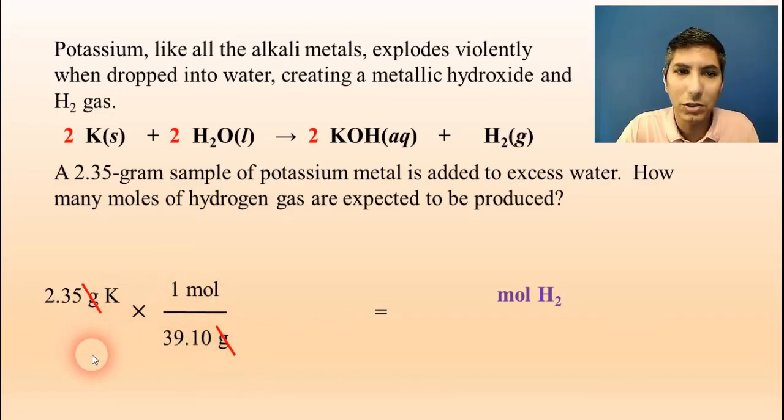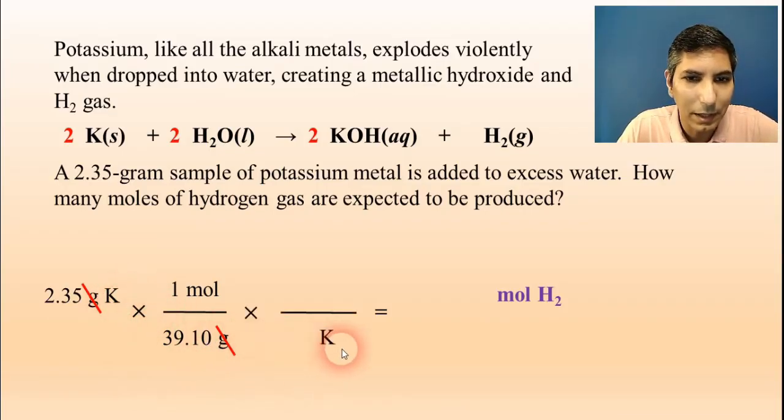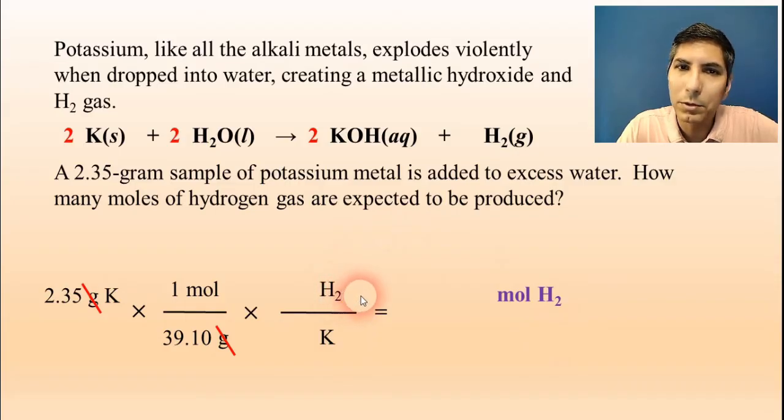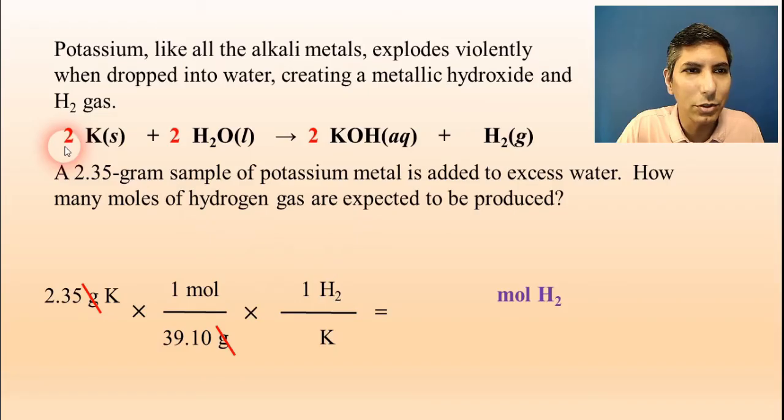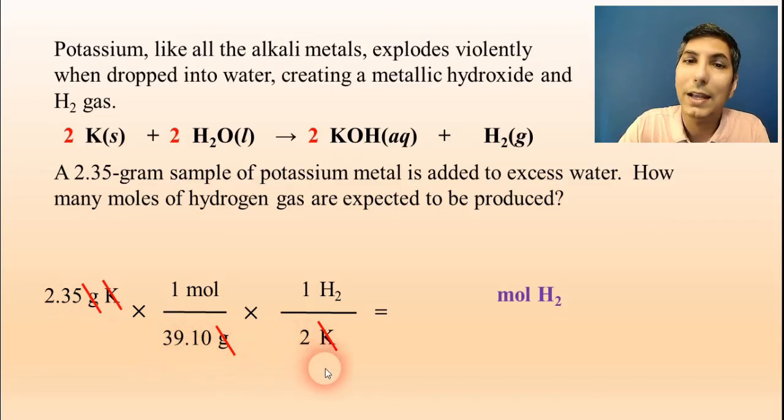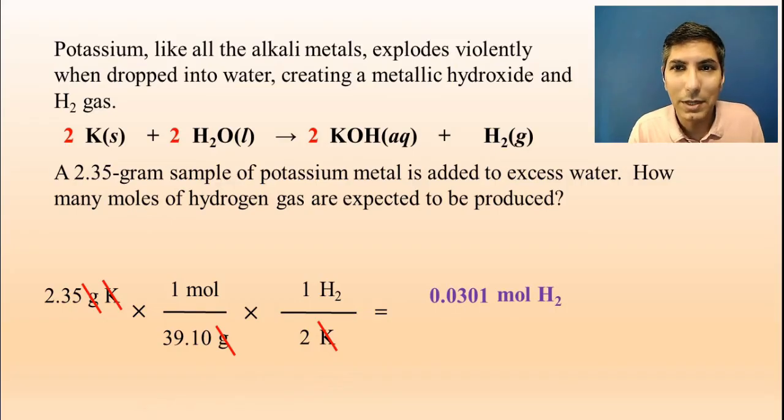Step two is the mole ratio. In my mole ratio, I'm going to put K, potassium, on the bottom, so it'll cancel. Since I'm converting to H₂, H₂ has to go in the numerator. The numbers for this mole ratio are drawn straight out of the balanced equation. There's a 1 next to H₂, so I'll put a 1 there. There's a 2 next to potassium, so I'll put a 2 for that one. This is a 1 to 2 ratio. Cancel that out top and bottom. I'm in moles of hydrogen, and guess what? My goal is to be in moles of hydrogen, so I don't even have to do a third step this time. I'm already in that final unit. Now I just have to key these numbers into my calculator. I take 2.35 divided by 39.10, divided by 2, and I get the answer as 0.0301 moles of hydrogen.